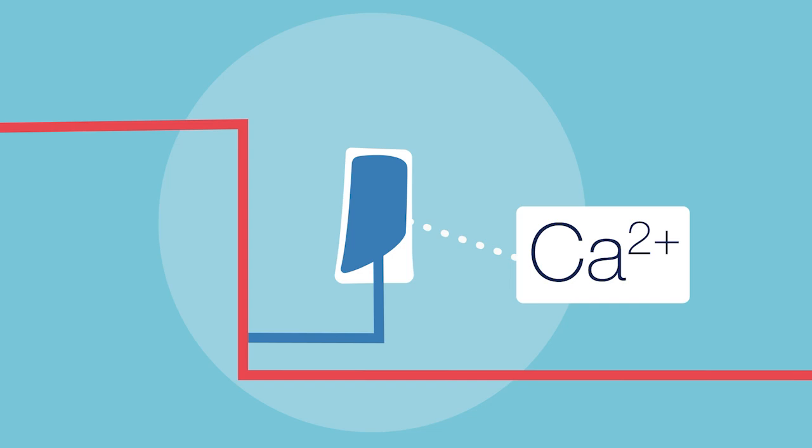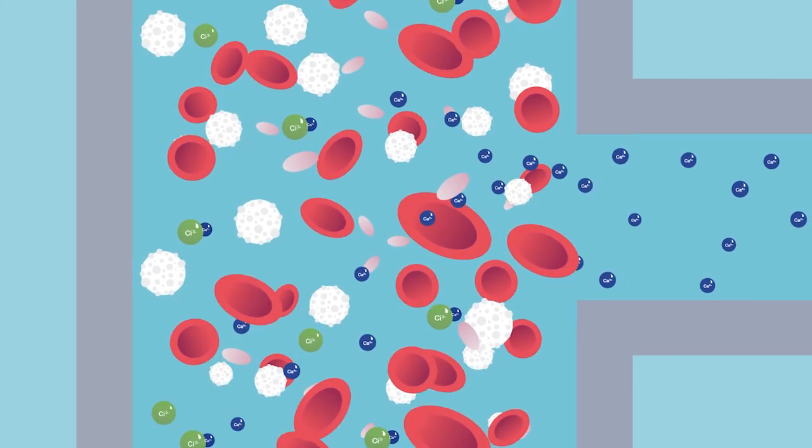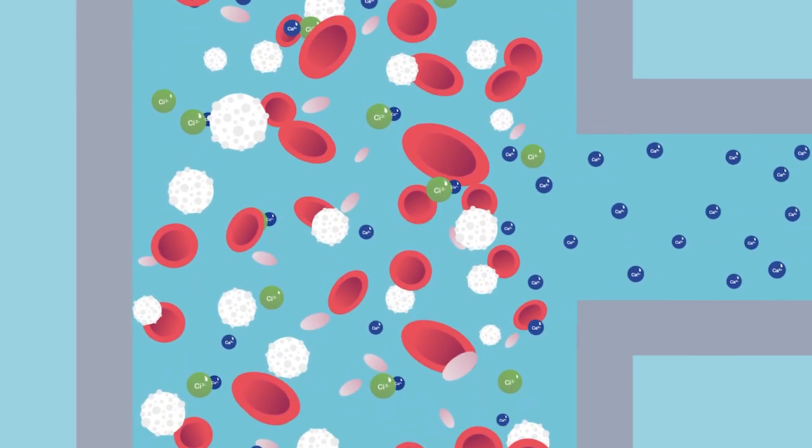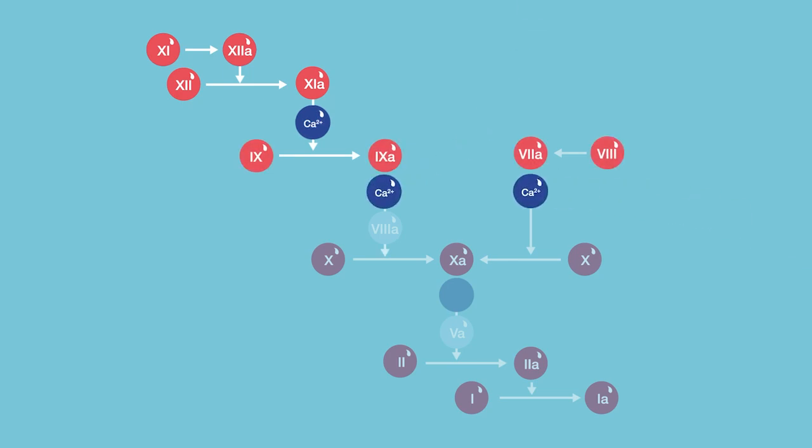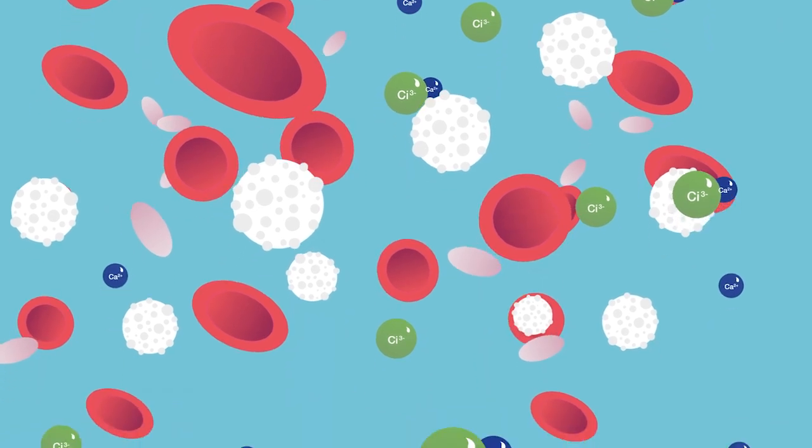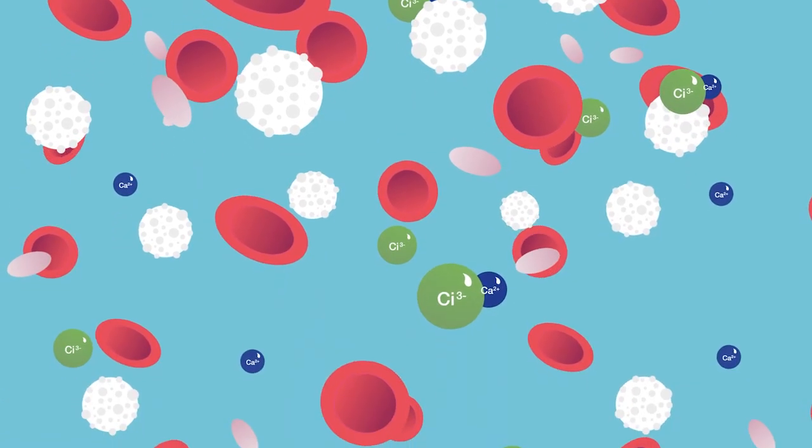This is necessary to prevent systemic hypocalcemia. It happens by adding calcium chloride to the return line of the dialysis machine, which is also important to restore the components of the coagulation cascade. Some of the calcium citrate complexes are still present in the blood after the filtration process.